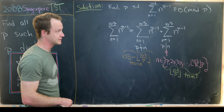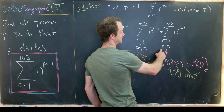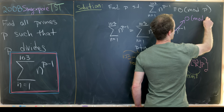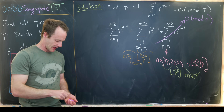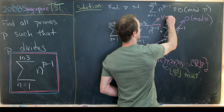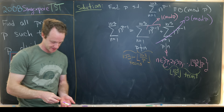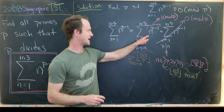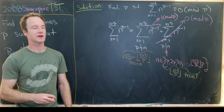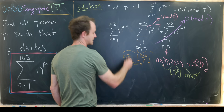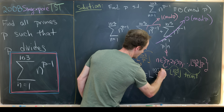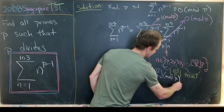Now we apply modular arithmetic. When p divides n, each term n^(p-1) is a multiple of p, so it goes to 0 mod p. By Fermat's Little Theorem, when p does not divide n, n^(p-1) is congruent to 1 mod p. We're adding up exactly 103 minus floor(103/p) such ones, so the whole sum is congruent to 103 minus floor(103/p) mod p.